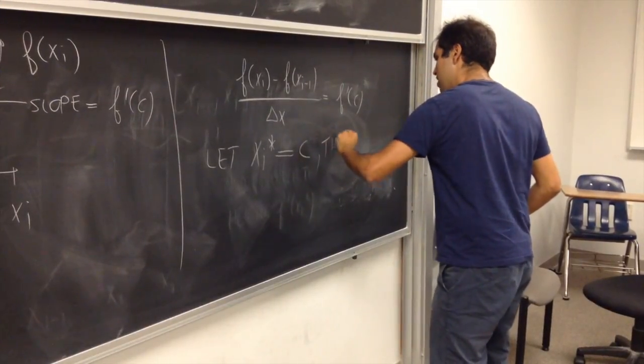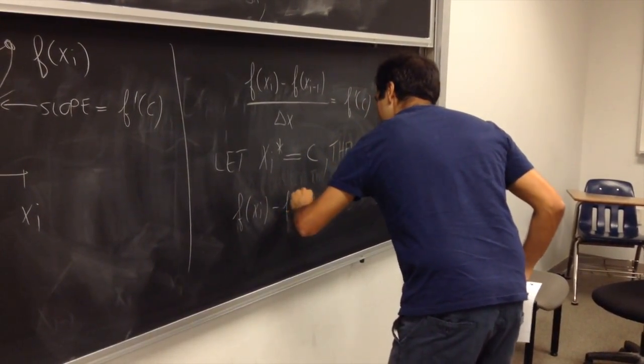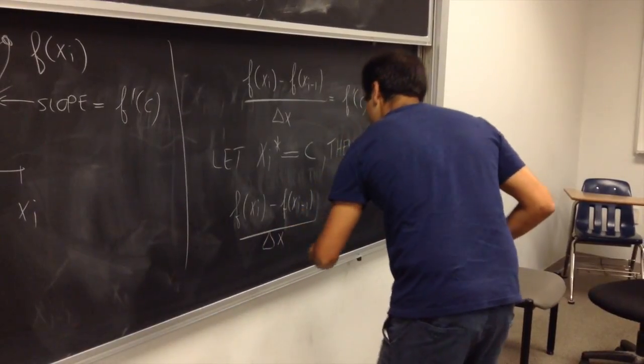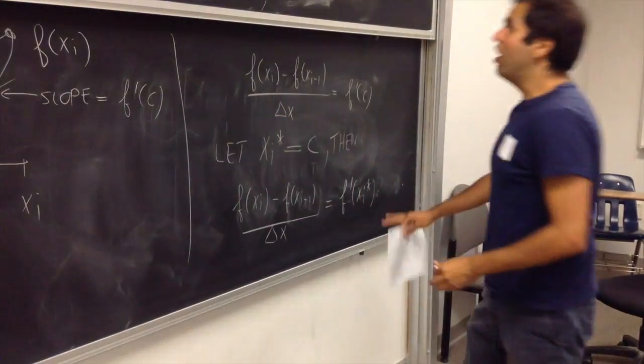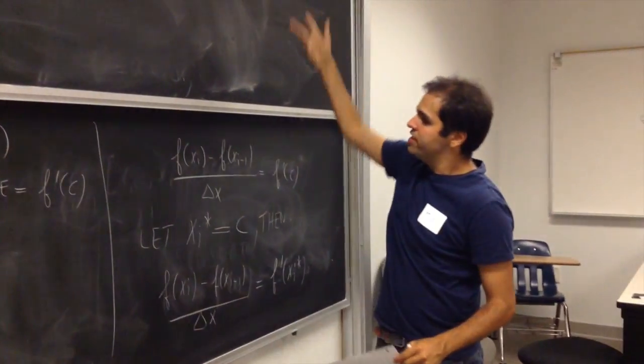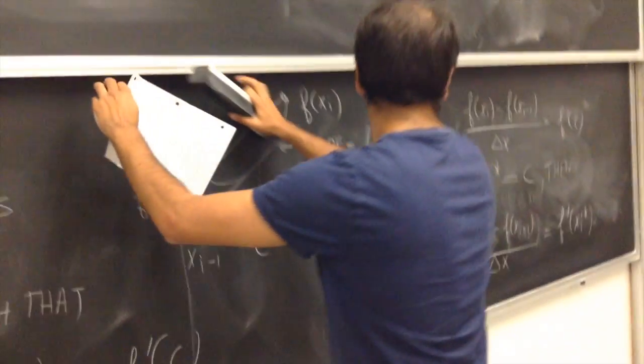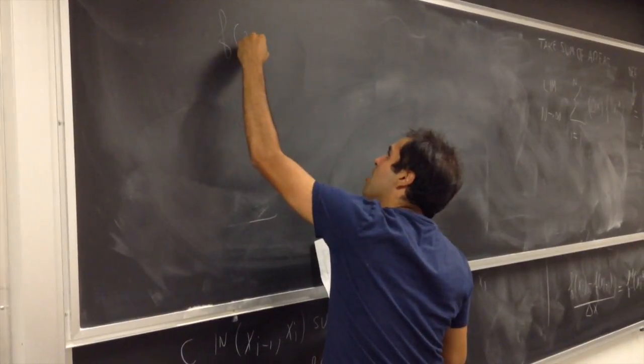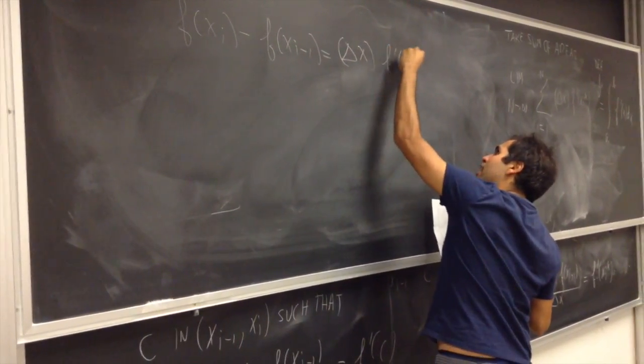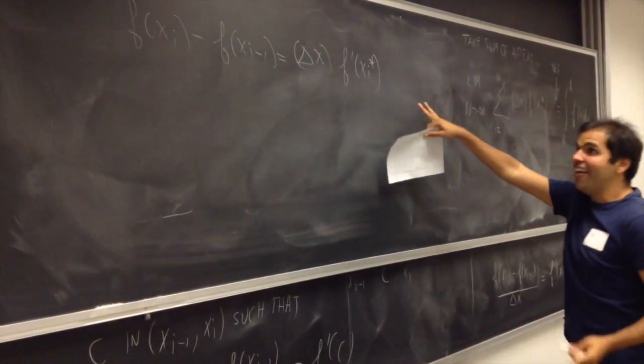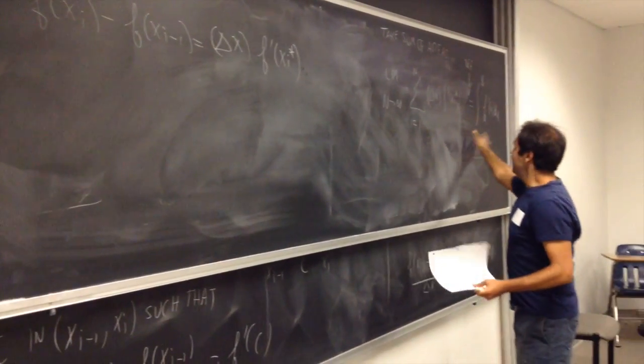Then, what do we have? We have a very important formula. f of xi minus f of xi minus 1 over delta x equals to f prime of xi star. In other words, so remember, this sum involves delta x f prime of xi star that actually equals to this little thing. Like this little sucker. So, f of xi minus f of xi minus 1 equals to delta x f prime of xi star. And now that we have this nice identity, which looks almost like FTC-like, let's just plug this in into this formula.